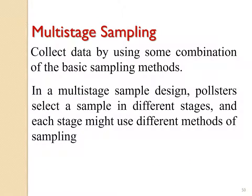Multi-stage sampling means collecting data by using some combination of basic sampling methods — for example, random sampling, stratified sampling, and cluster sampling combined. In a multi-stage sample design, we select the sample in different stages and each stage might use a different method of sampling. This situation is called multi-stage sampling.